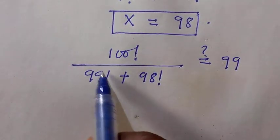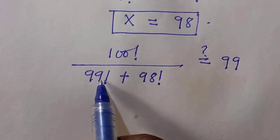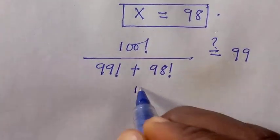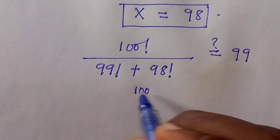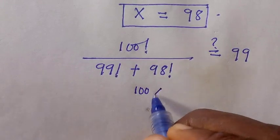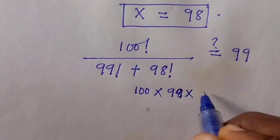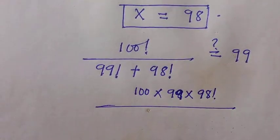We can write this as 99 multiplied by 98 factorial. And here we have 100. Let's break this thing as well. Here is 100 multiplied by 99 multiplied by 98 factorial divided by 98 factorial.